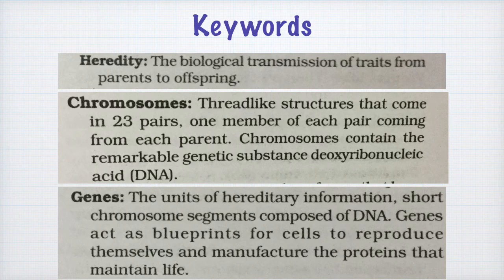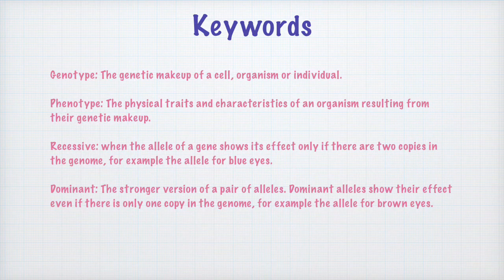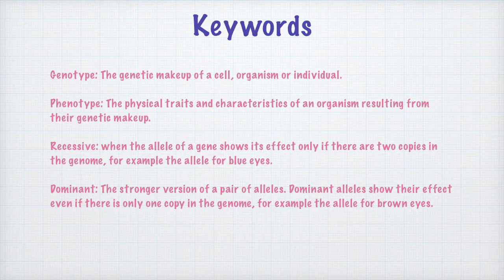Here are certain keywords and their definitions. Note these down in your notebooks. Some important keywords are: genotype, phenotype, recessive and dominant genes. Genotype is the genetic makeup of a cell. Phenotype is the physical traits and characteristics of an organism resulting from their genetic makeup. Genotype refers to the genetic constitution you have, while phenotype refers to the expression of that genetic constitution in terms of physical characteristics and traits.